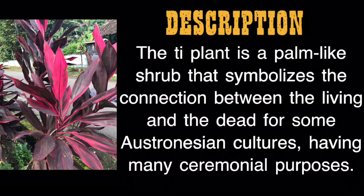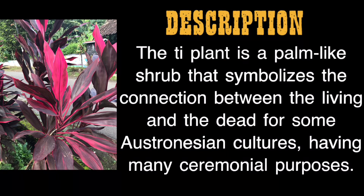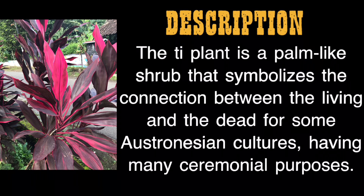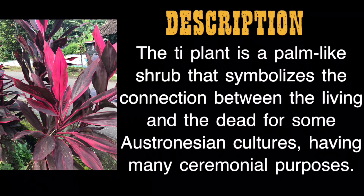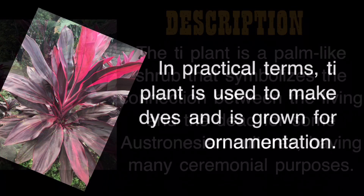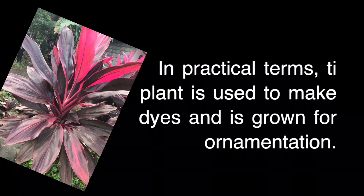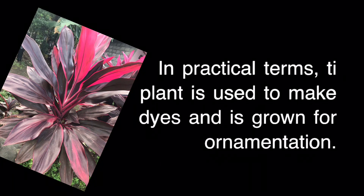Description: The Ti plant is a palm-like shrub that symbolizes the connection between the living and the dead for some Austronesian cultures, having many ceremonial purposes. In practical terms, the Ti plant is used to make dyes and is grown for ornamentation.